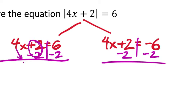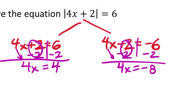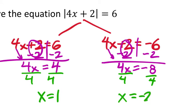But now I'd have a 4x here on the left equals 6 minus 2 is 4. And on the right, not my 4x, negative 6 minus 2 is negative 8. Well, that's going to be convenient because now when I divide both sides of both equations by 4, I get x equals 1 and also x equals negative 2.